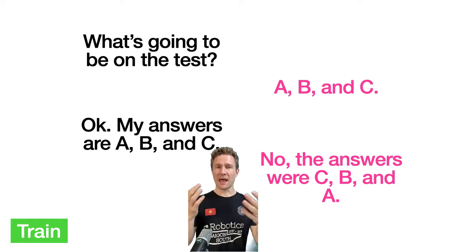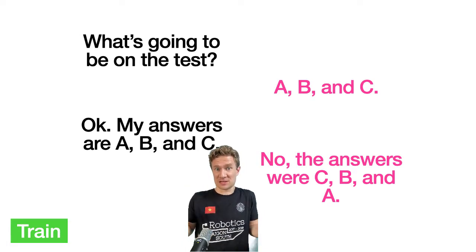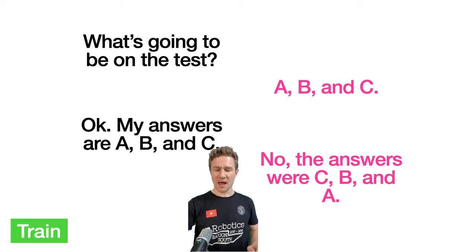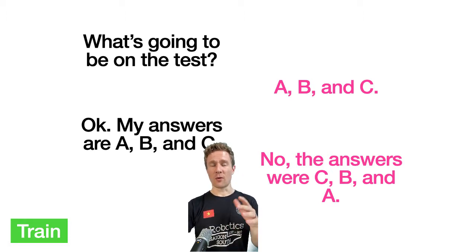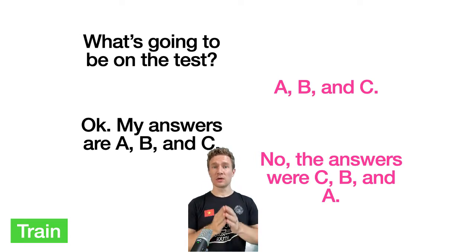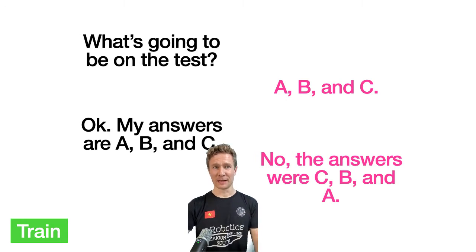Initially that can make students upset because it's something different from what they were expecting. As a teacher — as someone trying to train students or a machine learning algorithm — you want to make sure you're not oversimplifying what you tell them you're going to test on. This will make more sense with more information in the context of machine learning in a little bit.